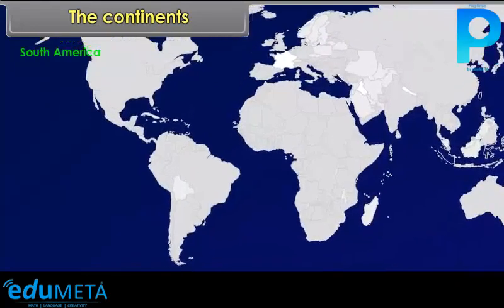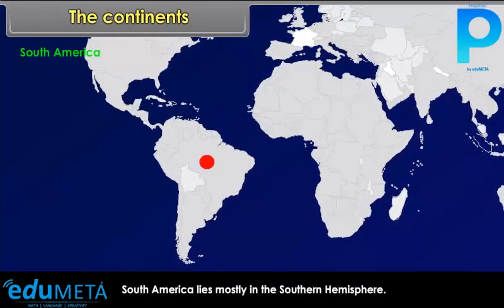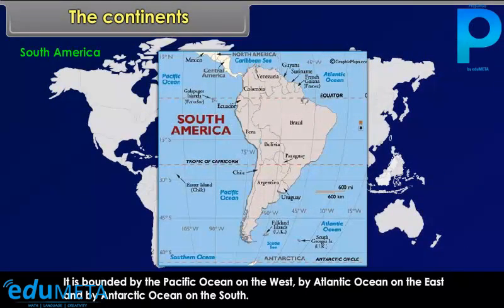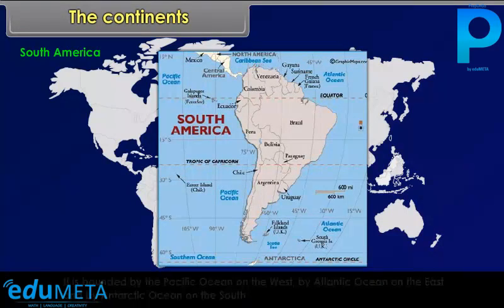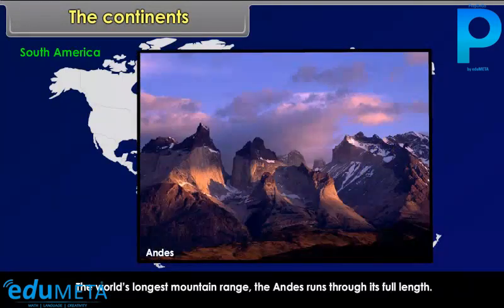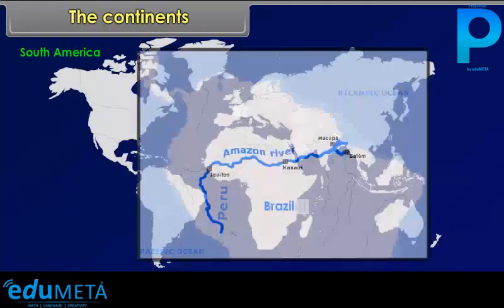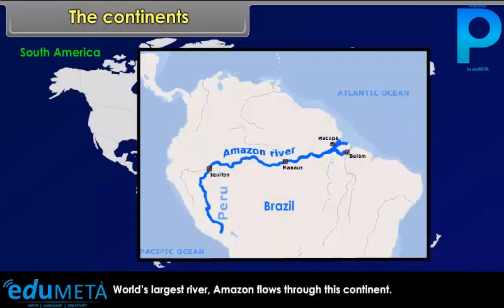South America lies mostly in the Southern Hemisphere. It is bounded by the Pacific Ocean on the west, the Atlantic Ocean on the east, and the Antarctic Ocean on the south. The world's longest mountain range, the Andes, runs through its full length. The world's largest river, the Amazon, flows through this continent.